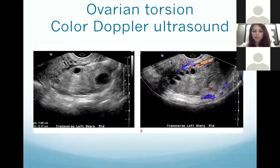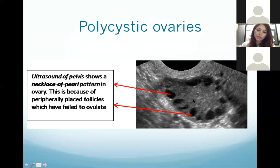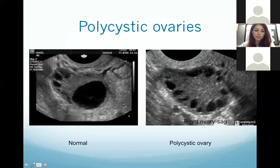This is another image showing ovarian torsion. This image shows polycystic ovaries — the necklace-of-pearl pattern — with multiple follicles of equal size arranged at the periphery of the ovary with a central solid stroma. Here you can see a normal ovary with follicles of different sizes — some small, some medium, some large — versus an ovary with all equal-sized follicles arranged at the periphery.